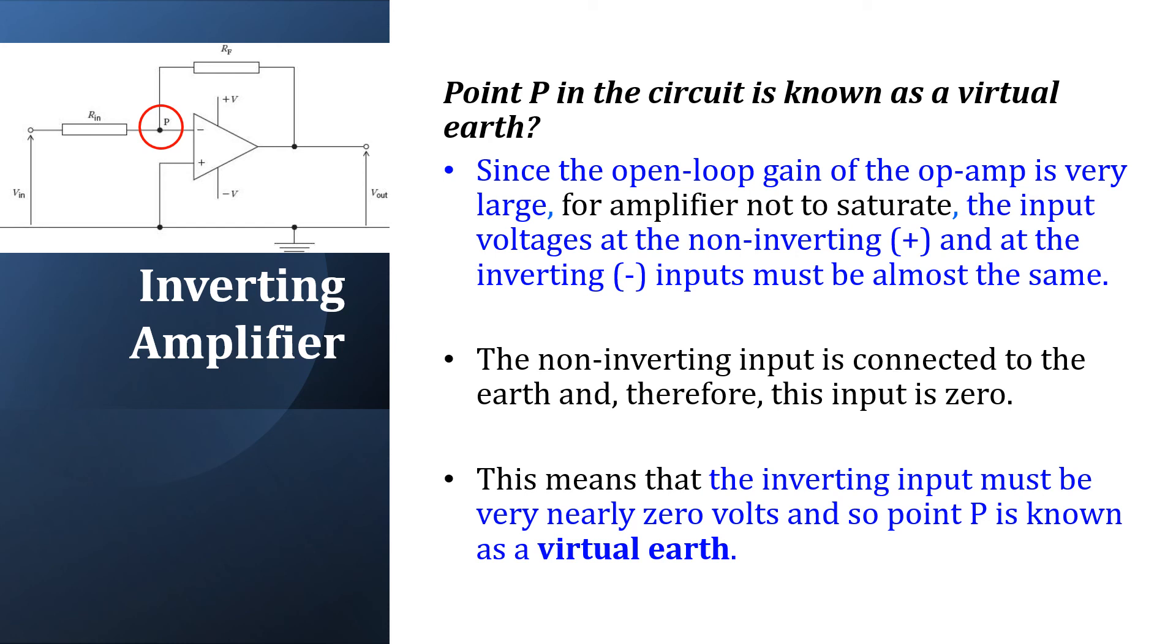In an inverting amplifier, point P in the circuit is known as a virtual earth. Explain. Since the open loop gain of the op amp is very large, for amplifier not to saturate, the input voltages at the non-inverting and at the inverting inputs must be almost the same. The non-inverting input is connected to the earth and therefore this input is zero. This means that the inverting input must be very nearly zero volts, and so point P is known as a virtual earth.